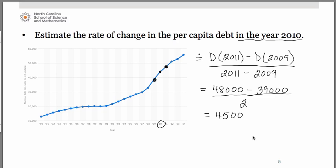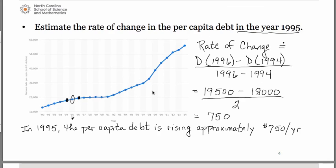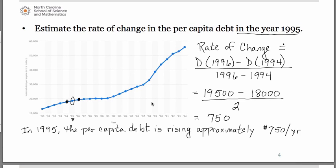These are problems where we're really going for the process you use to arrive at your answer, not so much the actual answer itself — it's the process and a correct interpretation. So maybe you got $4,500 like I did. Everybody should have gotten a positive answer somewhere in that ballpark. This tells us that in 2010, the per capita debt is rising approximately $4,500 per year. Notice how different that is from the previous one — look how steep the graph is at 2010 compared to how flat it is at 1995.